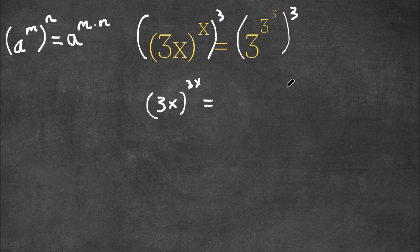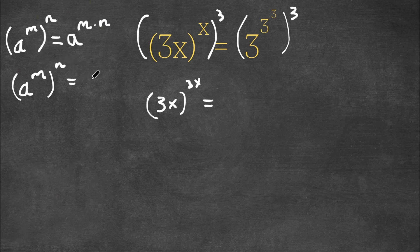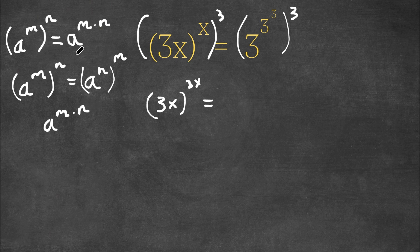And this is equal to — now a to the power of m to the power of n is also equal to a to the power of n to the power of m, because essentially both of these are equal to a to the power of m times n. So they can change places. So right here we have 3 to the power of 3 to the power of 3 to the power of 3, and this can be written as 3 to the power of 3 to the power of 3.